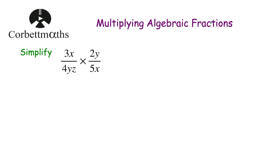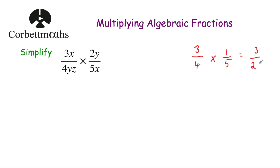Before we look at the algebraic fractions let's just have a look at a numerical example. So if we had three-quarters multiplied by one-fifth, to multiply these we would just multiply the numerators together and multiply the denominators together. So three times one is equal to three and four times five is equal to twenty. So three-quarters multiplied by one-fifth is equal to three-twentieths. To multiply fractions together you just multiply the numerators and multiply the denominators.